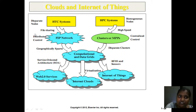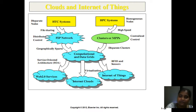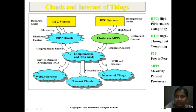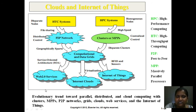P2P networks operate in terms of distributed control, but if you observe they are a centralized control. All these are helpful for nodes to form data grids. In terms of usage, we progressed to web services, internet clouds, and finally the internet of things — where any hardware device can operate even if you are not physically present. Abbreviations: HPC is high performance computing, HTC is high throughput computing, P2P is peer-to-peer, and MPP is massively parallel processor.